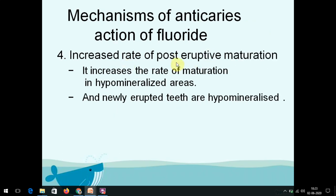The fourth mechanism is the increased rate of post-eruptive maturation. There are two phases: pre-eruptive maturation, happening before the tooth erupts into the oral cavity, and post-eruptive maturation, which is critical because it is a lifelong process. Every day there is ion loss from the tooth surface balanced by ion replenishment. If ion loss exceeds replenishment, caries can develop. Fluoride is important here because it has a special capacity to remineralize hypomineralized areas — that is its biggest advantage.